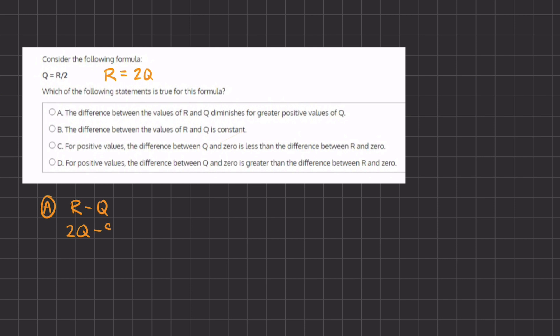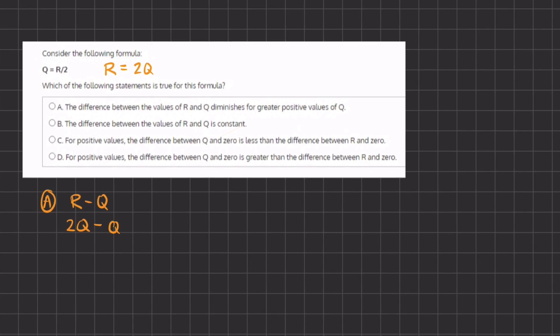just like we found above, we have 2Q minus Q, and we are left with Q. And because the difference equals Q, the greater positive values of Q doesn't necessarily grow or diminish, and therefore option A is eliminated.